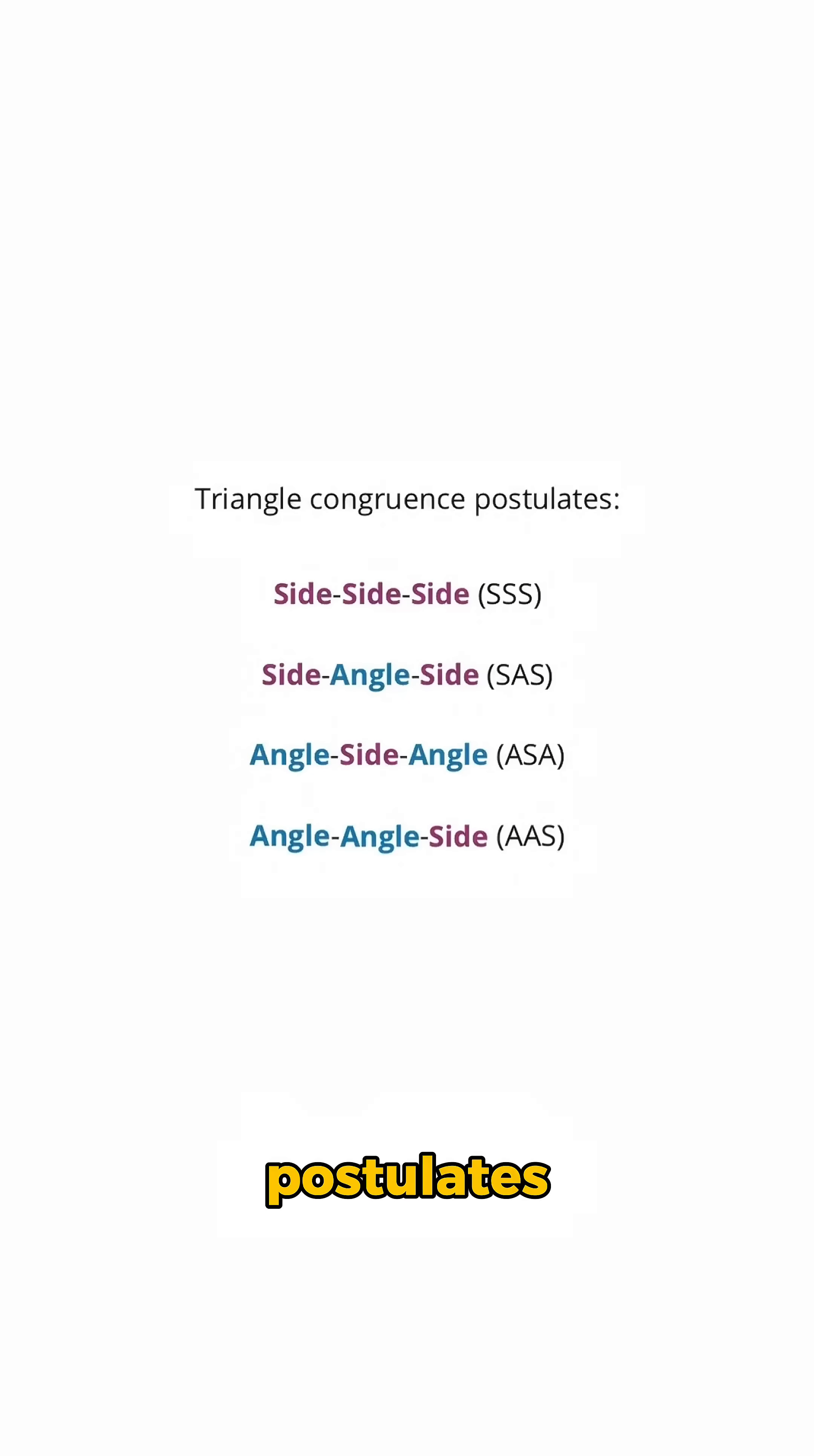So here are the four congruence postulates: side-side-side, side-angle-side, angle-side-angle, and now angle-angle-side, which you found is a result of angle-side-angle.